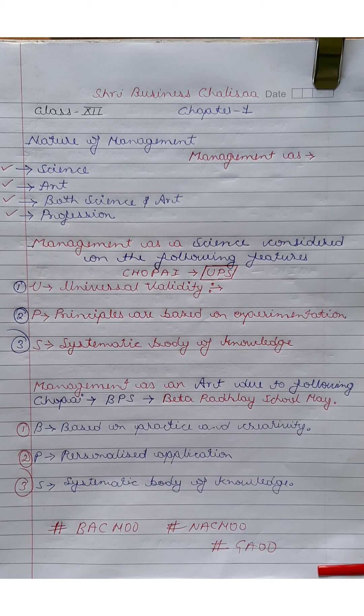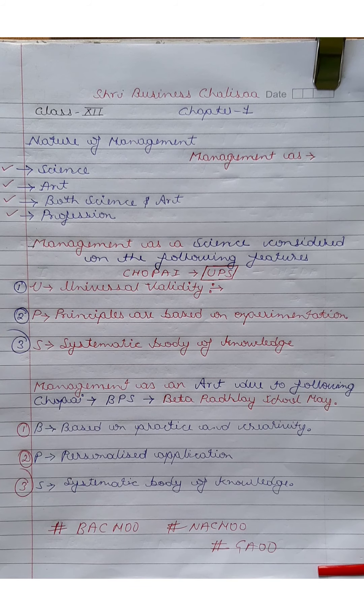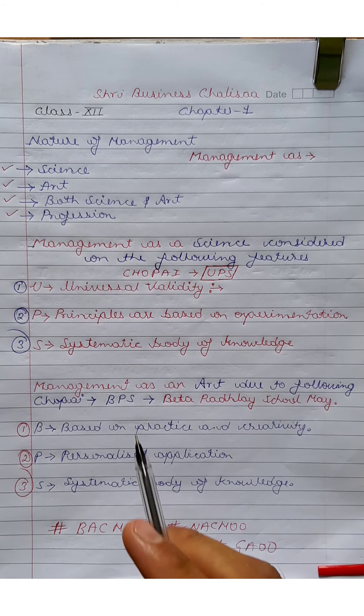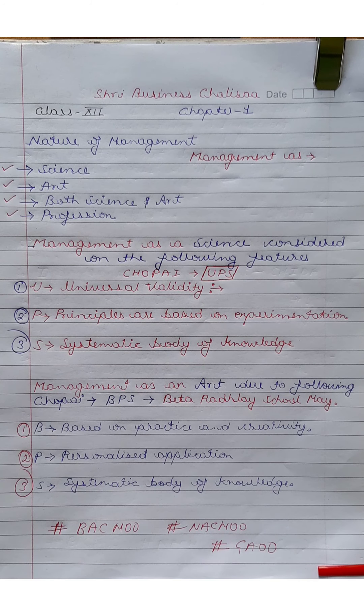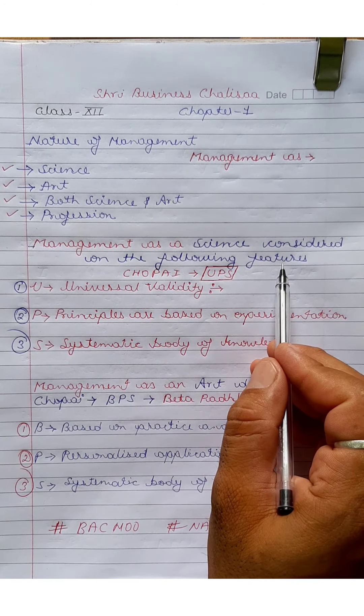The nature of management — it is the nature of science and art, and the nature of profession. The question is: how is it science, how is it art, and what are the features of profession? Let's go. Management is a science, considering the following features.